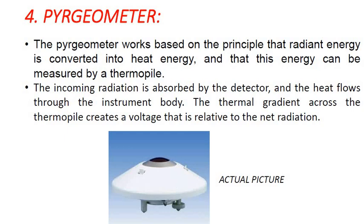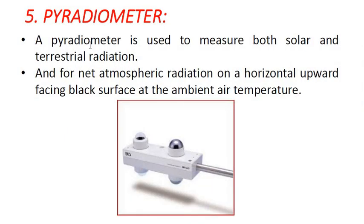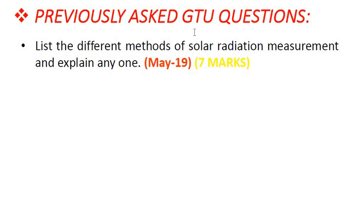A pyradiometer is used to measure both solar and terrestrial radiation, and is also called a net radiometer. It measures net atmospheric radiation on a horizontal upward-facing black surface at ambient air temperature.